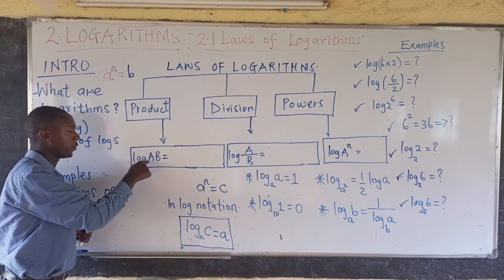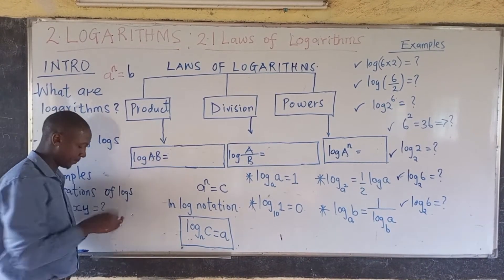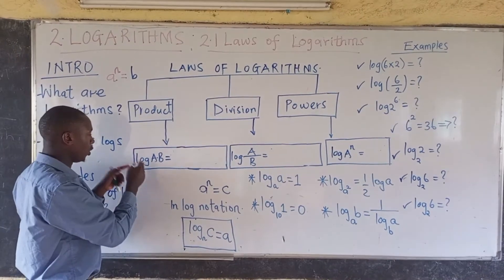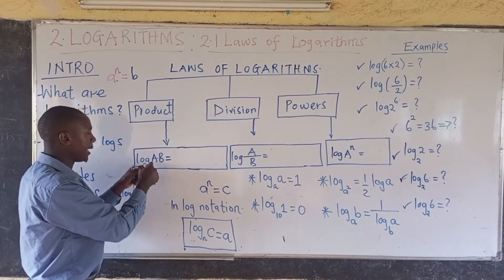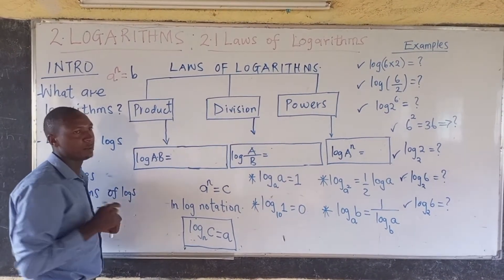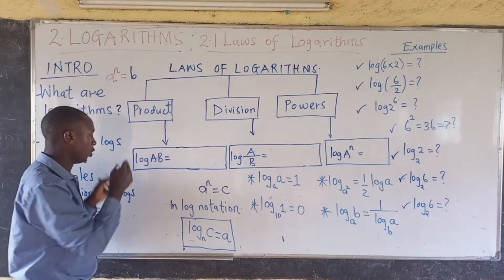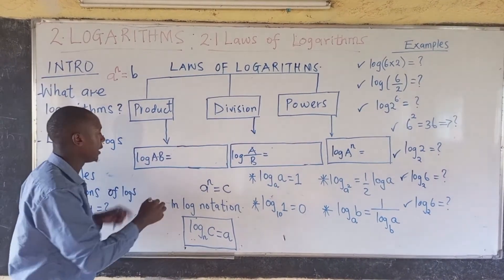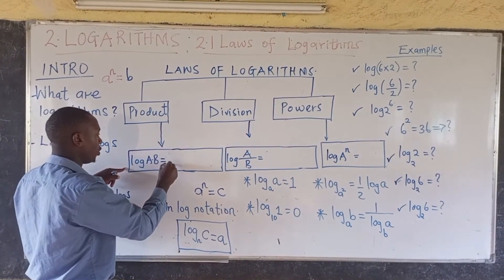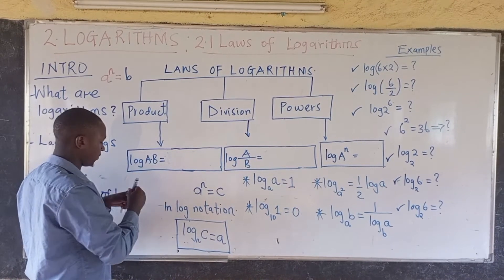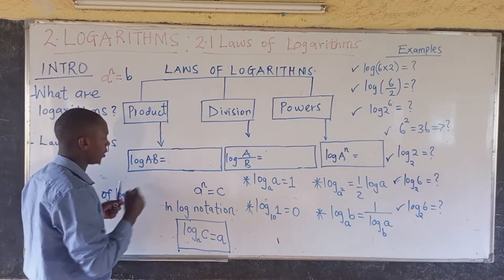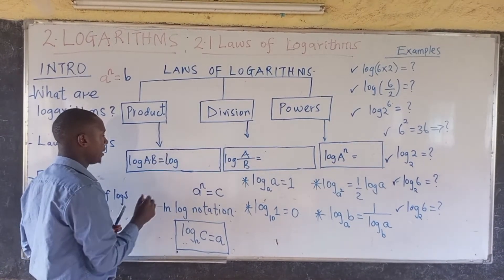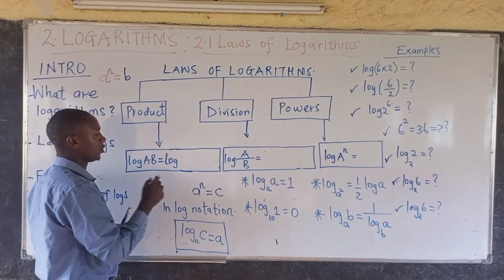In the first law, when we talk about products: if you have log of A multiplied by B, written as log(AB), then the result must be log of A plus log of B.